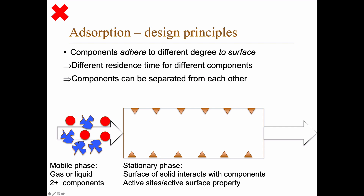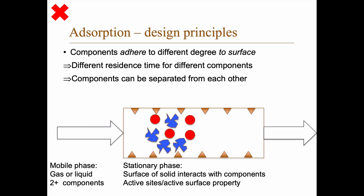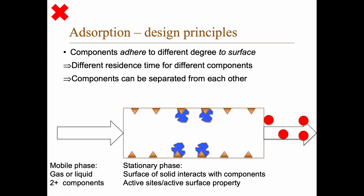In this case we have two components: the red circles and the blue blobs. These components adhere to a different degree to the surface. The blue blobs are shaped similarly to the active sites, so they have a tendency to stick, while the red circles cannot stick to the surface. This gives a shorter residence time for the red substance and a longer one for the blue, and thus you can separate the two components from each other.